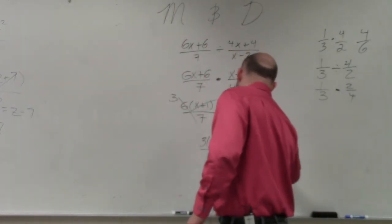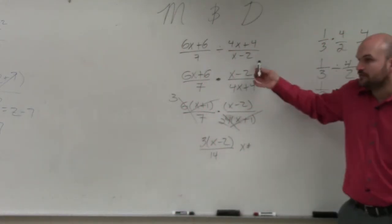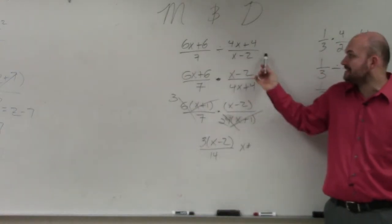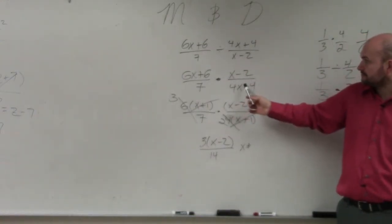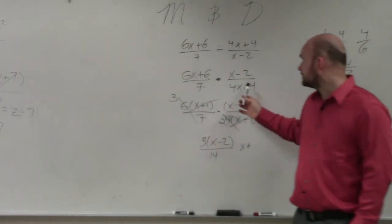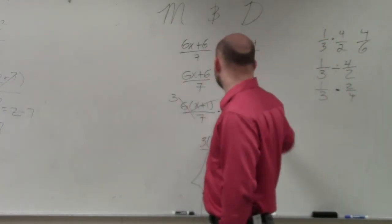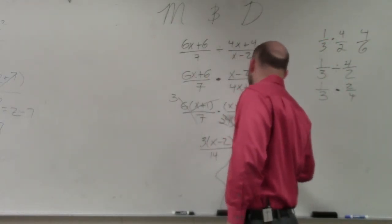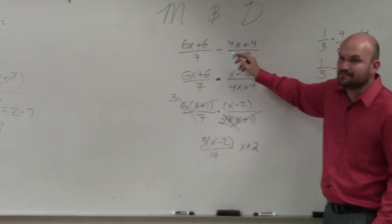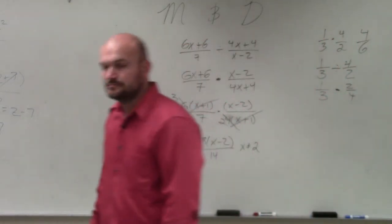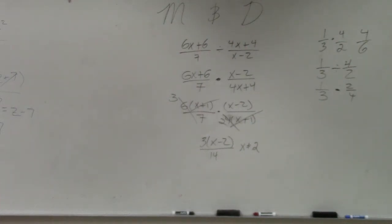And then if we go back to what x cannot equal, the only constraint of my problem is x cannot equal positive 2. Going back to my original problem, x cannot equal positive 2. I got one last problem if you want to wait for it.